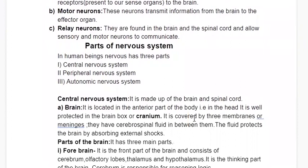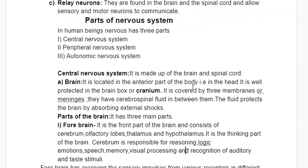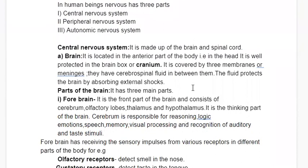The central nervous system is CNS, peripheral is PNS, and autonomic is ANS. The central nervous system consists of two parts: the brain and the spinal cord. The brain is located in the anterior part of the body, that is, the head. It is well protected in a brain box called the cranium and is covered by three membranes called meninges.